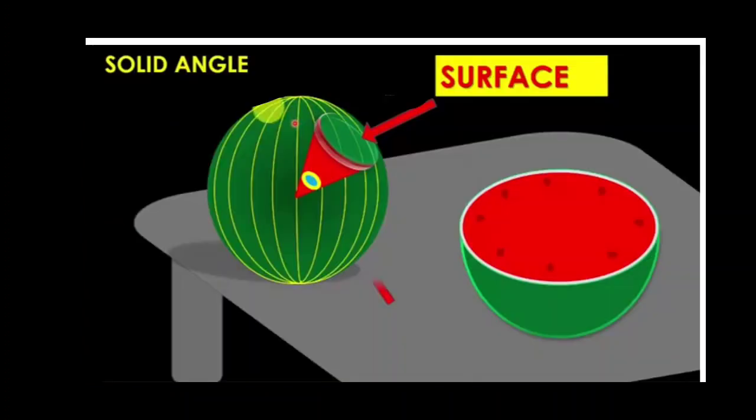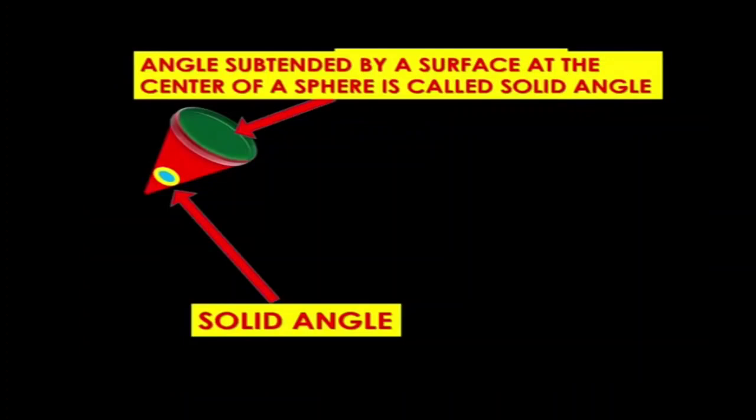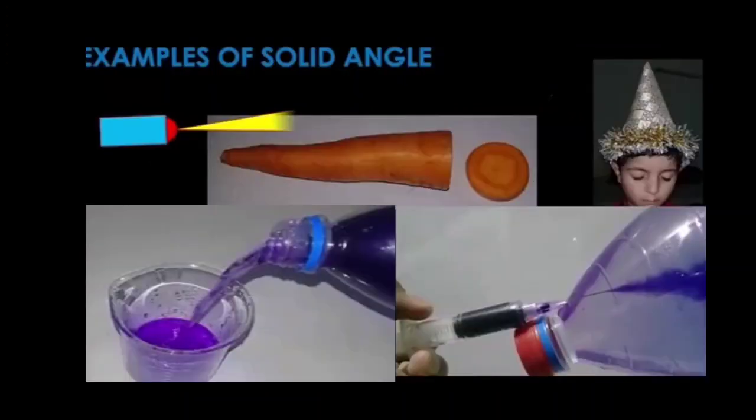Imagine a watermelon, which is a perfect sphere and a three-dimensional structure. The angle subtended by a surface at the center of a sphere is called a solid angle. Examples of solid angle include light produced from a point source, a carrot, a birthday cap, water poured from a container, and liquid injected by a syringe.